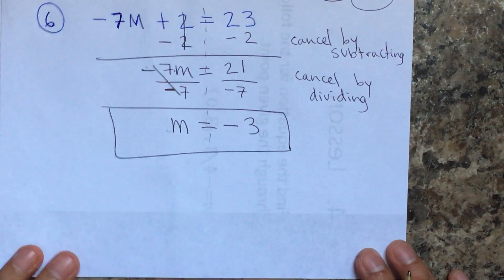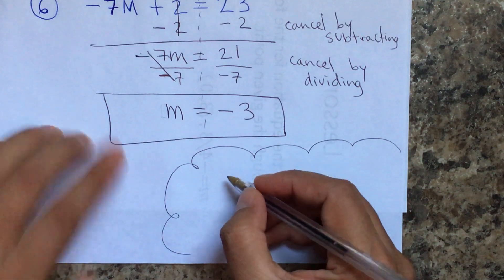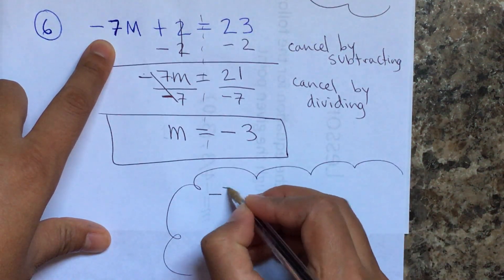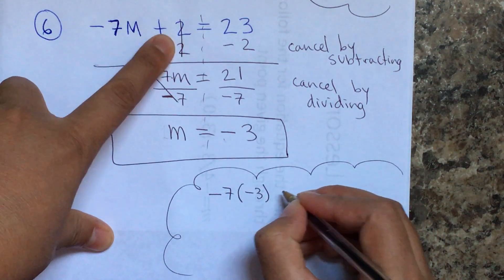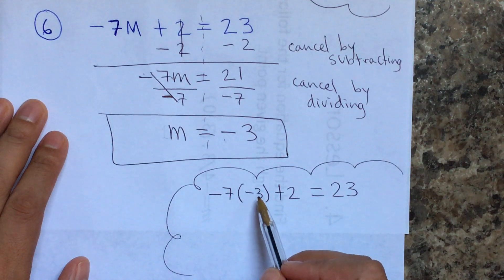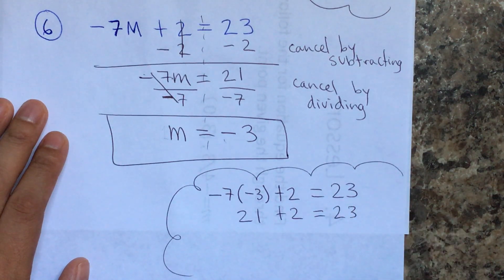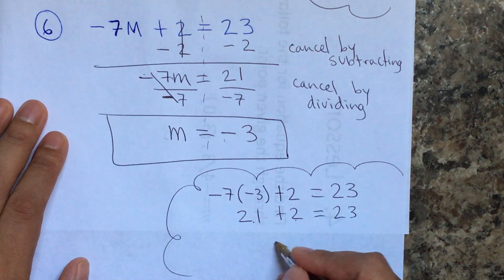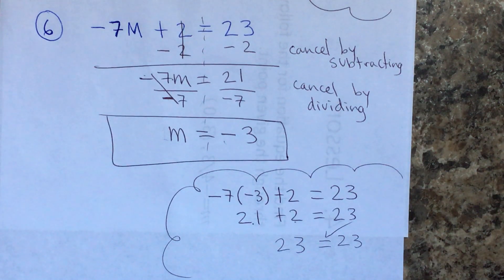Let's do the checkup test: negative 7 multiplied by m, which is negative 3, plus 2 should equal 23. Negative times negative is positive: 3 times 7 is 21, plus 2 equals 23 — and 21 plus 2 is 23. Check! With that, you're now able to work on your assignment, which is 11.12. Have fun!